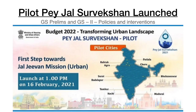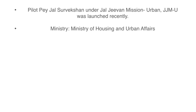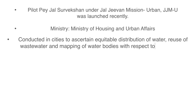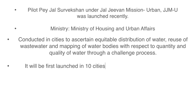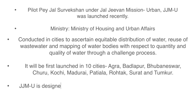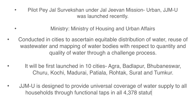The next headline: Pilot phase of Jal Sarvekshan launched under Jal Jeevan Mission Urban (JJMU), recently launched by the Ministry of Housing and Urban Affairs. On a pilot basis, it is conducted in cities to ascertain equitable distribution of water, reuse of wastewater, and mapping of water bodies with respect to quantity and quality through a challenge process. It will first launch in 10 cities: Agra, Badlapur, Bhubaneswar, Churu, Kochi, Madurai, Patiala, Rohtak, Surat, and Tumkur. JJMU is designed to provide water to all households in all 4,378 statutory towns in accordance with Sustainable Development Goal Number 6.